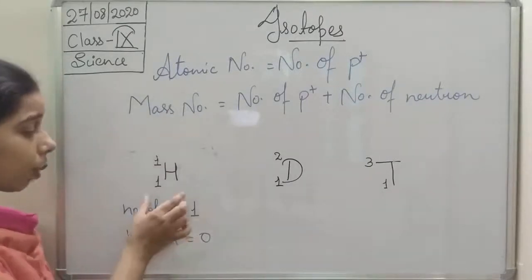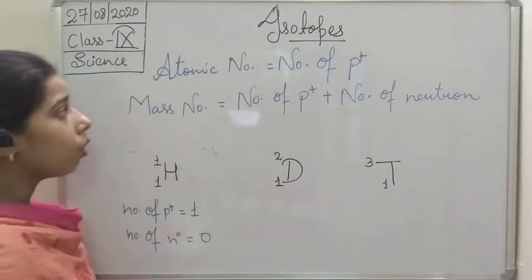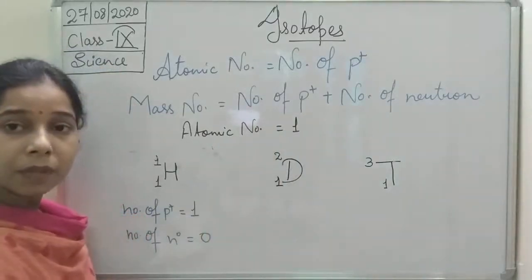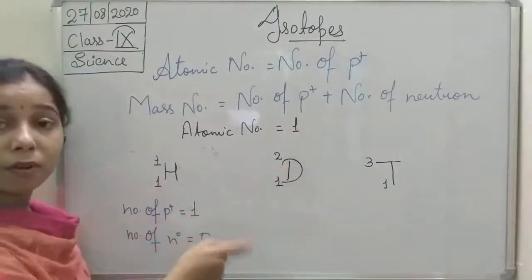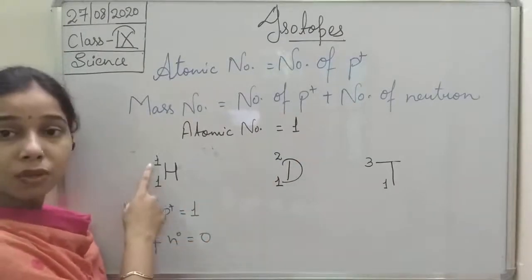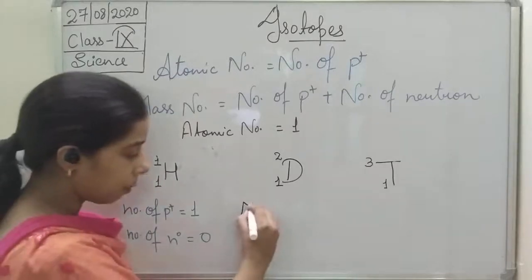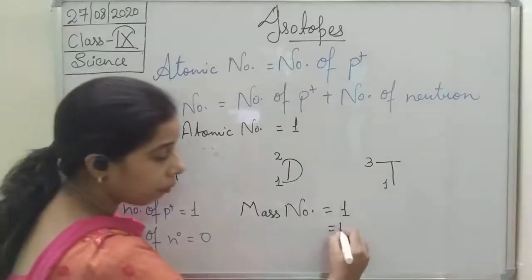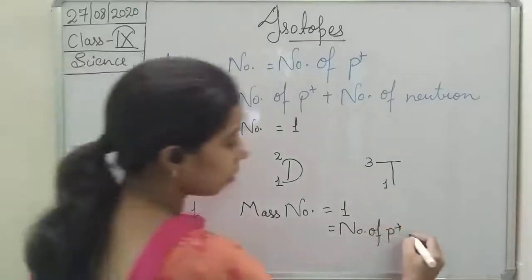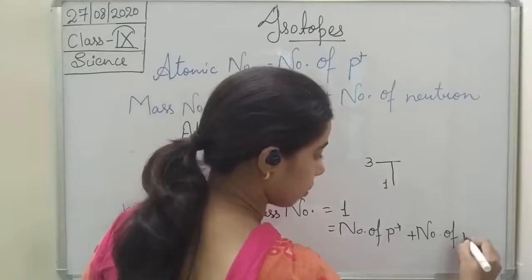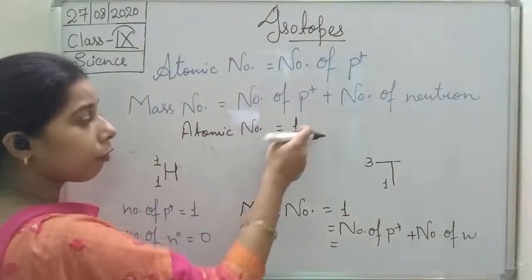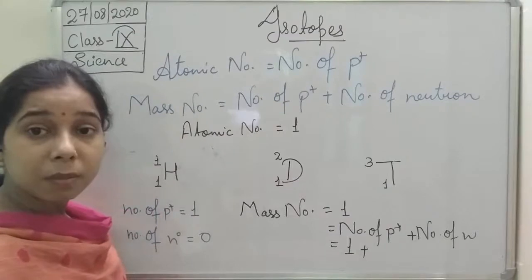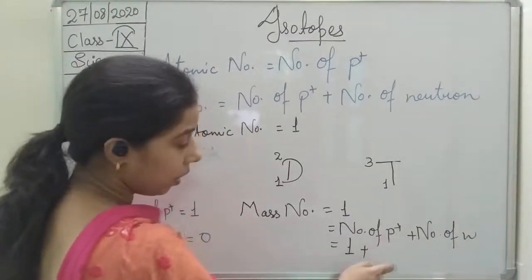The atomic number of hydrogen is 1, so number of protons is 1. Mass number is 1. So mass number equals number of protons plus number of neutrons: 1 equals 1 plus number of neutrons, meaning number of neutrons must be 0. Only then will we get mass number 1.